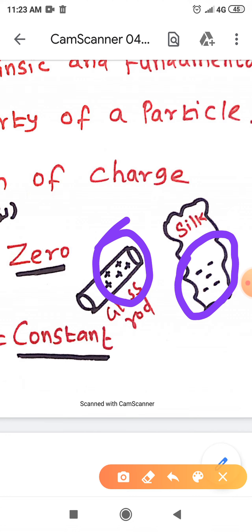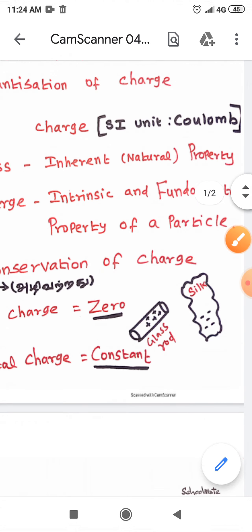For an example, here the silk acquires minus 5 charges and the glass rod acquires plus 5 charges. If you calculate the net charge, it will become zero. Therefore, the net charge of this system is zero, but the total charge of the system remains constant.